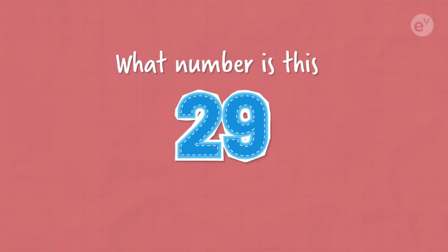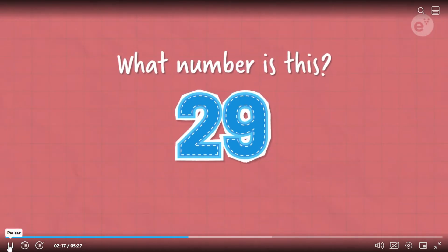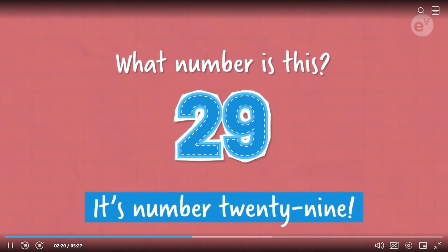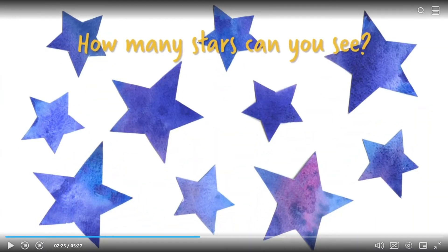Let's check now. Ready? What number is this? It's number twenty-nine. How many stars can you see? Five. Ten.